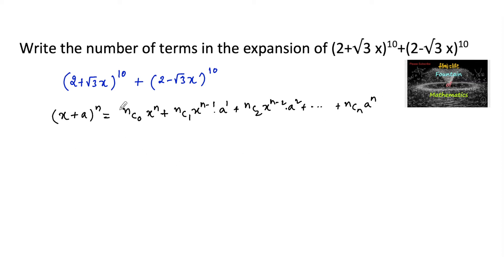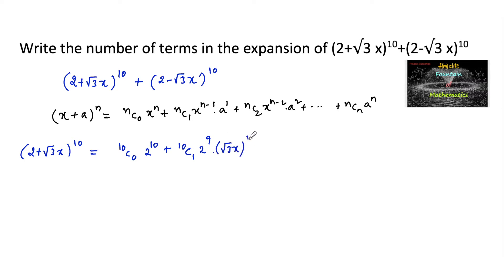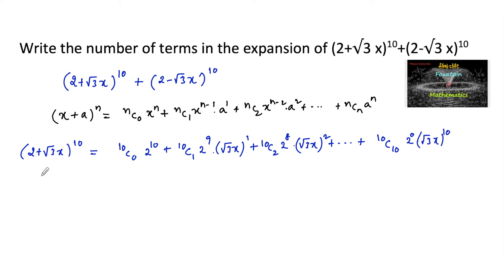So by using this binomial theorem, we can write (2 + √3x)^10 as: 10C0·2^10 + 10C1·2^9·(√3x)^1 + 10C2·2^8·(√3x)^2 and so on, up to 10C10·2^0·(√3x)^10.